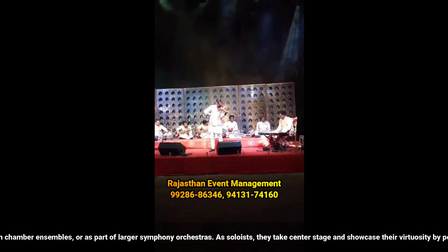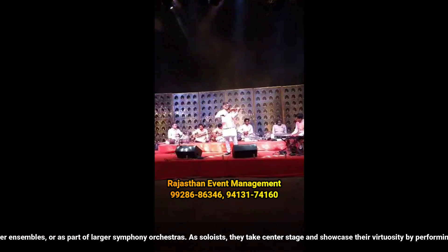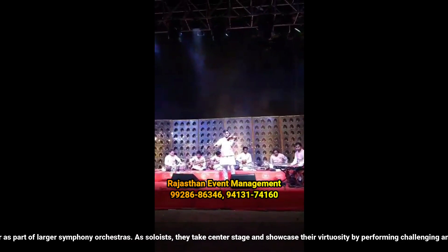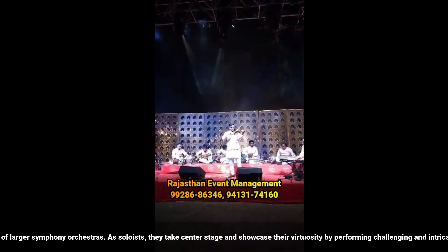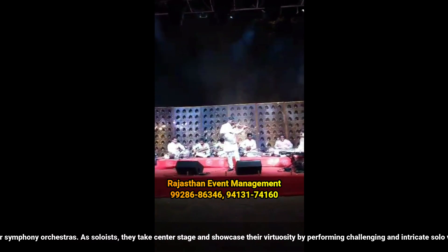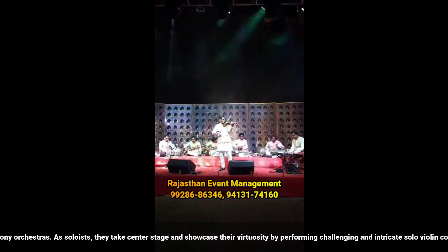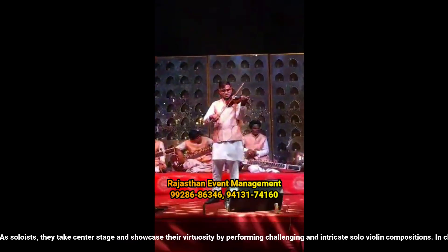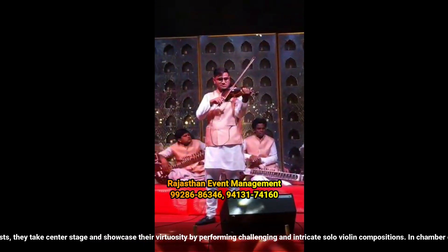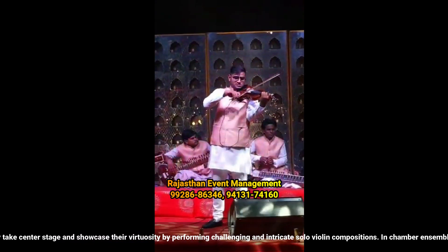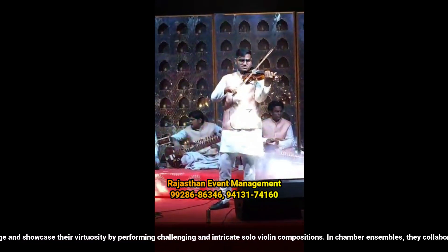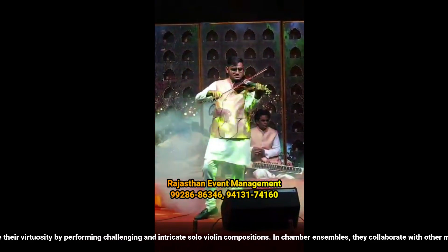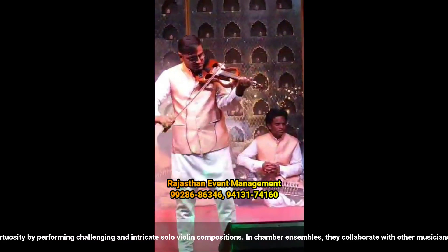The violin is a string instrument that is played with a bow. It has four strings and is typically held against the player's shoulder while they draw the bow across the strings to produce sound. It is commonly used in classical music, as well as various other genres.